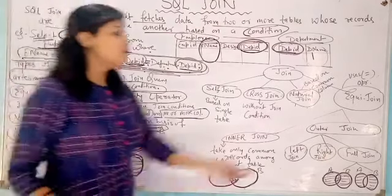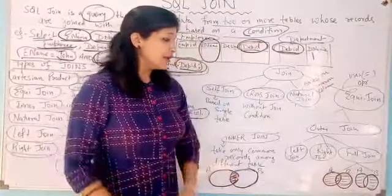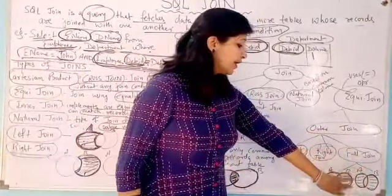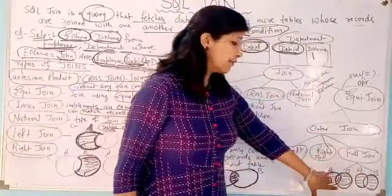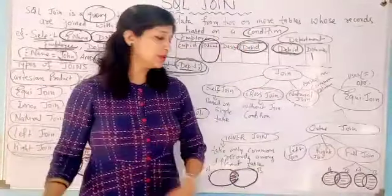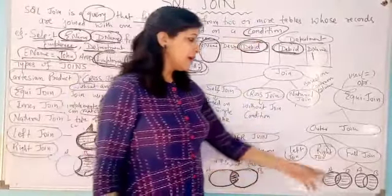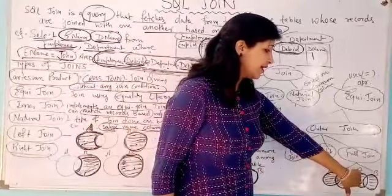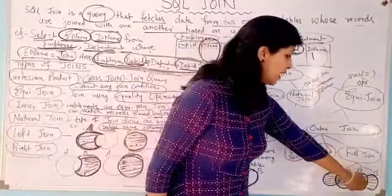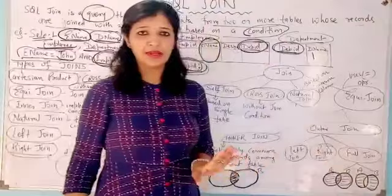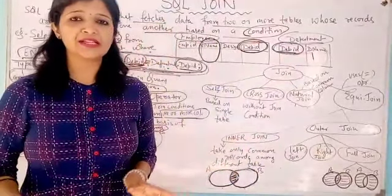Similarly, full outer join also has two variations. In full outer join, we take all records from both tables, which is similar to the union operation in set theory. The second variation is where we exclude the common records among both tables. This is all about the join operation in SQL.